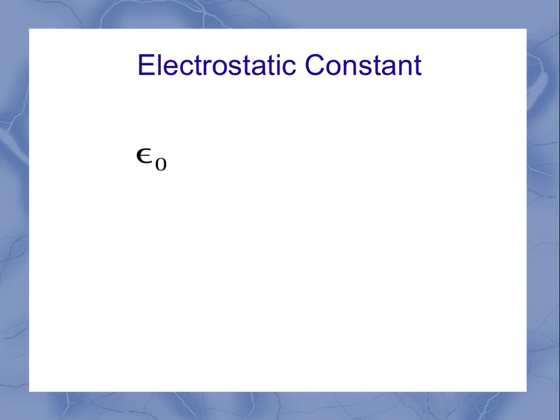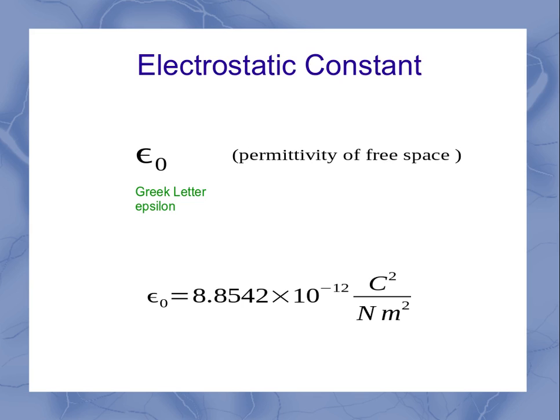That electrostatic constant, as a reminder, that's Greek letter epsilon naught, is our permittivity of free space. And it has a standard value given in most tables as a fundamental physical constant. And I just want to note for you right now, the units are coulomb squared per newton meter squared.